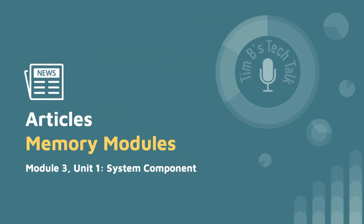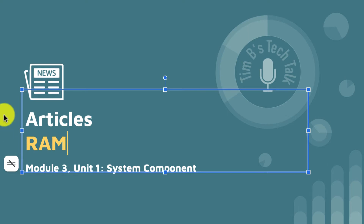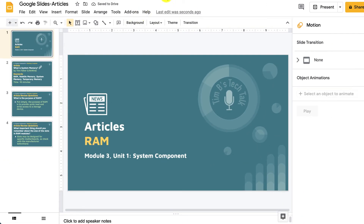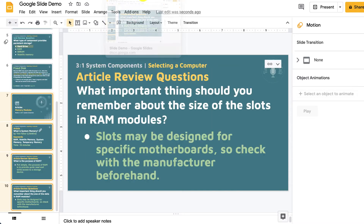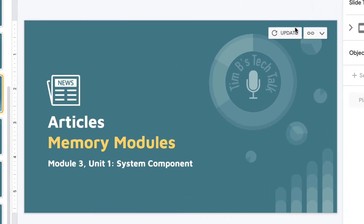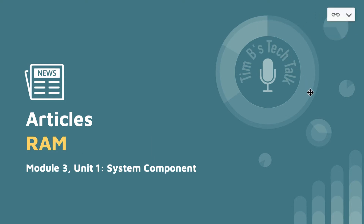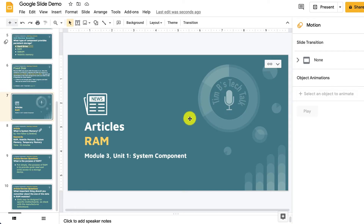So when you go into this master slide — let's say I decide to call the title of this article 'RAM' instead of 'memory modules' — and when I go back to the slide that these slides were added to, I can then go in and update the link. You do so by just selecting update. You'll see a little message appear on that slide. Click update, and you can see it changes that title to correspond with the original master slide.